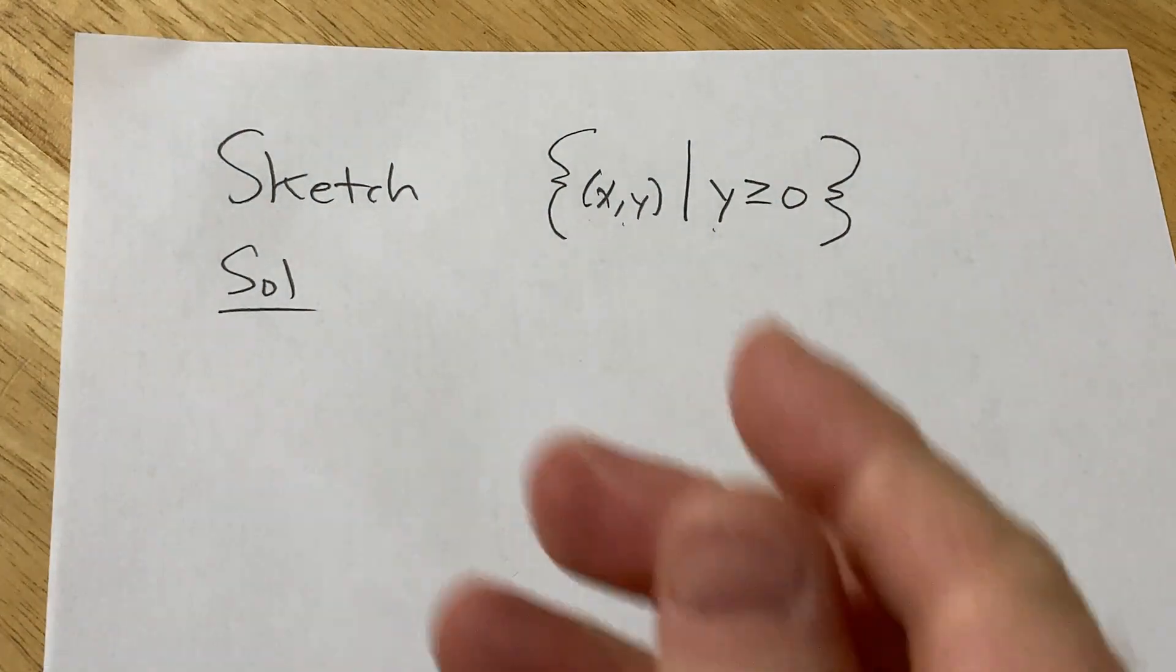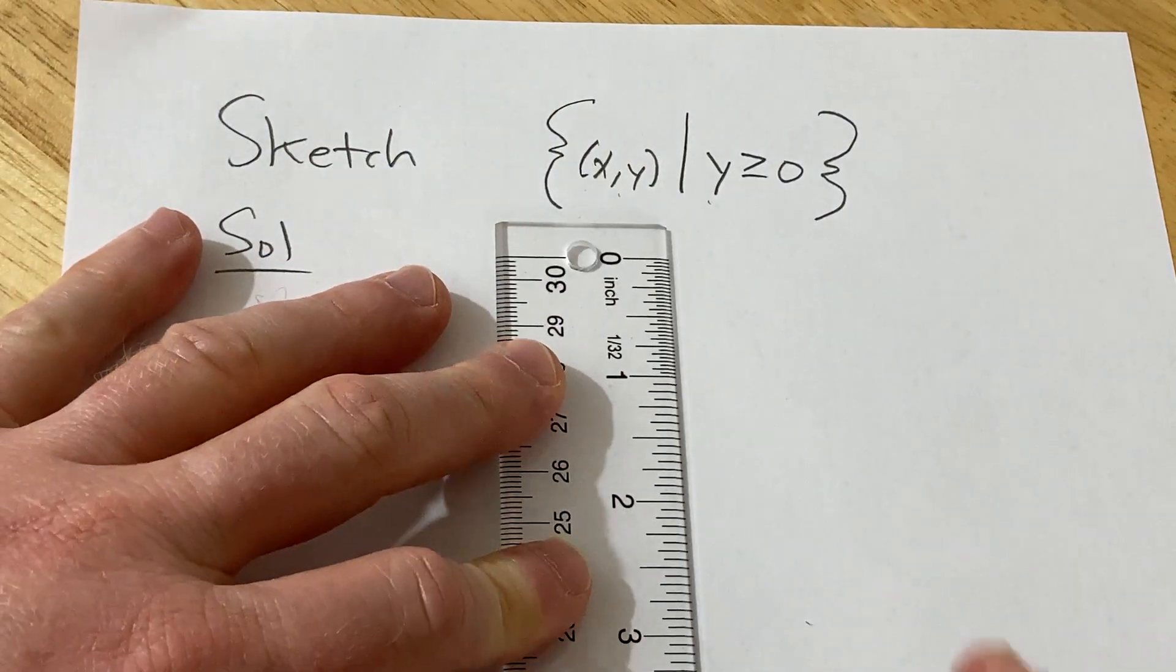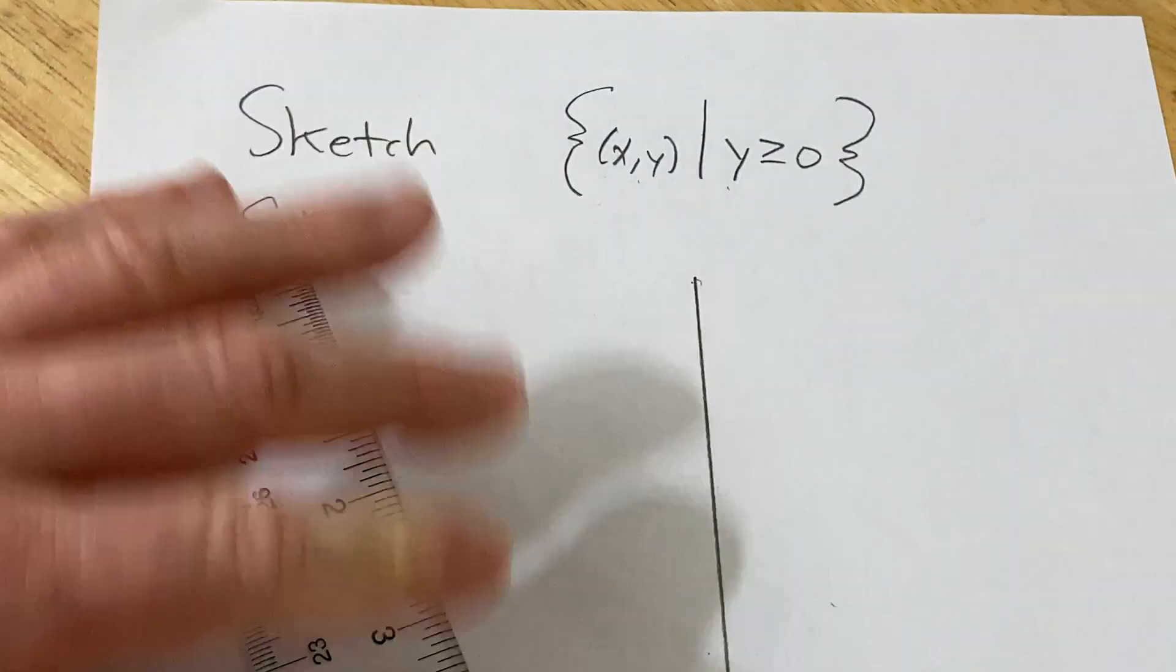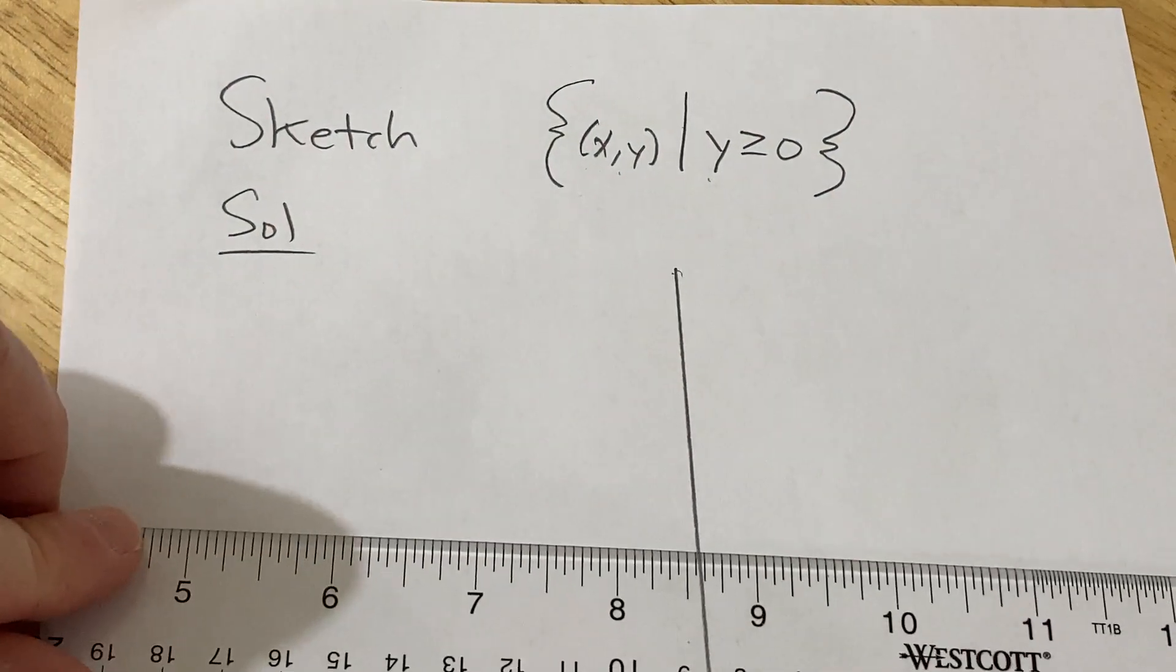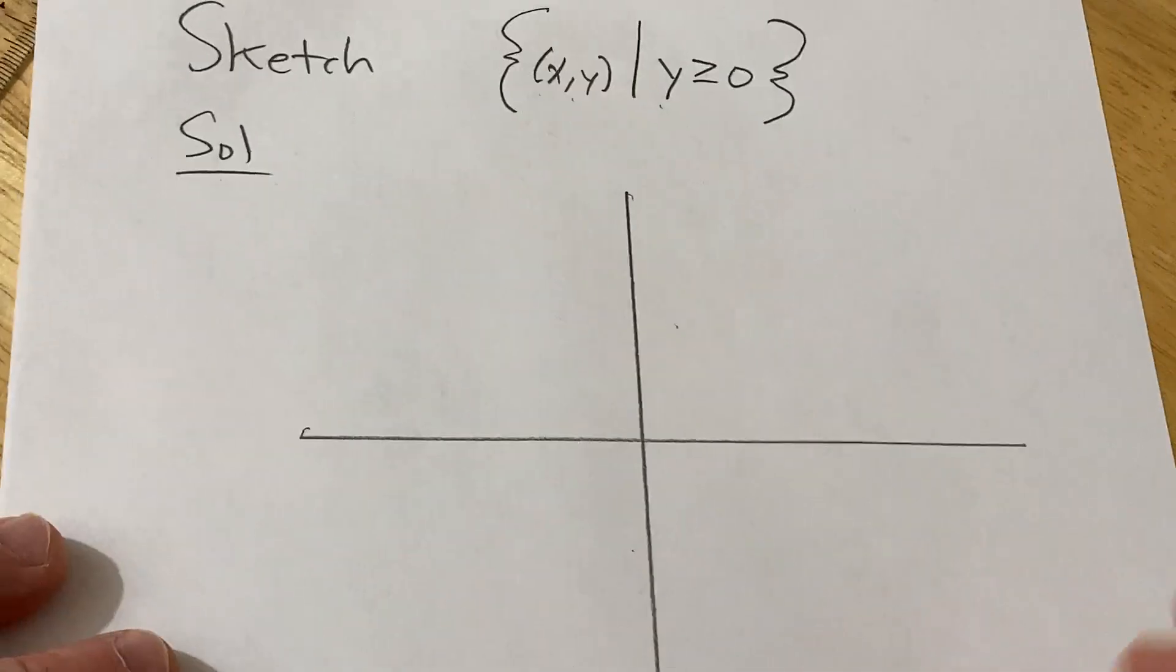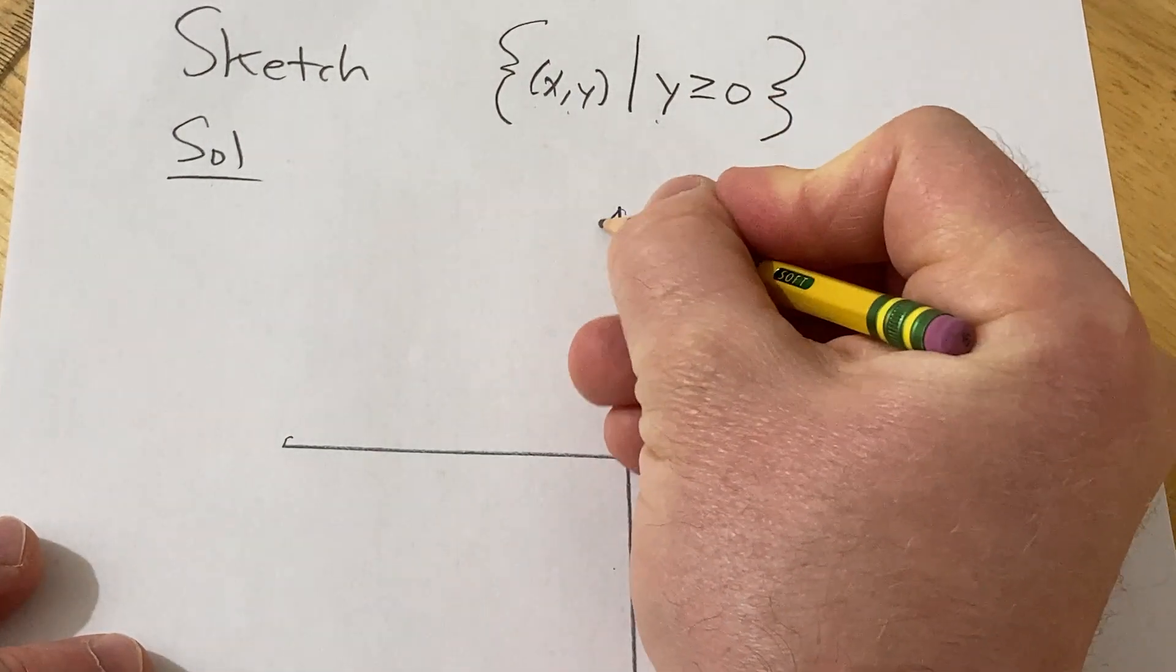So I'm going to start by drawing the x and y plane. I've got a little ruler here to help me draw my straight lines because I'm not very good at straight lines. That's pretty good and that's pretty good. So this is going to be our x axis and this is going to be our y axis.